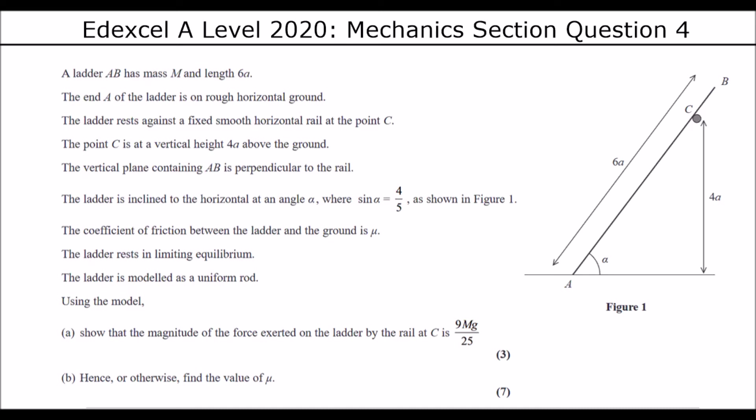The vertical plane containing AB is perpendicular to the rail. The ladder is inclined to the horizontal at angle alpha, where sin alpha is four fifths. The coefficient of friction between the ladder and the ground is mu. The ladder is in limiting equilibrium, and the ladder is modelled as a uniform rod, so the mass is down the center. So let's draw all of these bits onto the diagram.